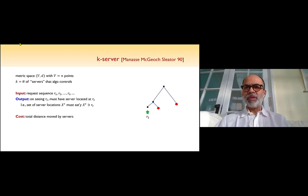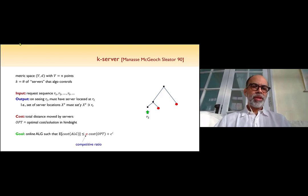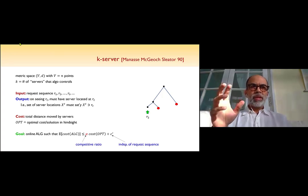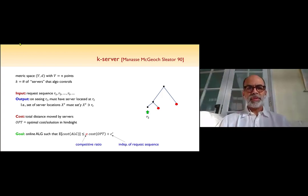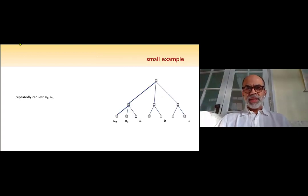What you want to do is minimize the total distance traversed by the servers. This is a classic problem going back to work by Manasseh, Magoo, and Slater in 1990. As in previous talks, we are interested in competitive analysis. This is the competitive ratio, and we are allowing some additive terms. Particularly for most of the K-Server results, there are some additive terms which depend on the metric space, but not on the actual request sequence.